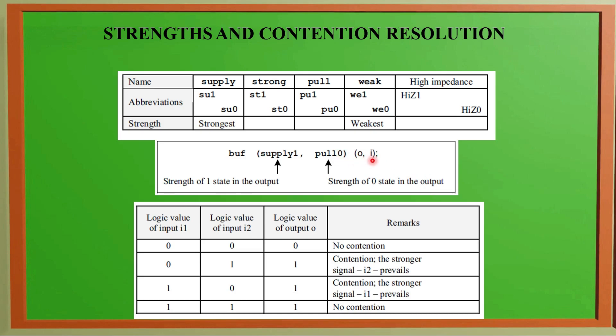Here we can see this table. Suppose we have I1 and I2, two inputs. Logic value of input 1 I1 and logic value of input I2. We may have 00, 01, 10, 11. If both inputs are 0, the logic value of output will also be 0. That means there is no contention.